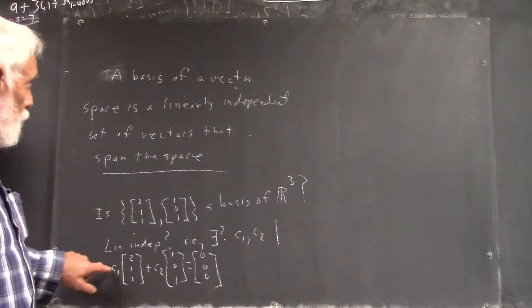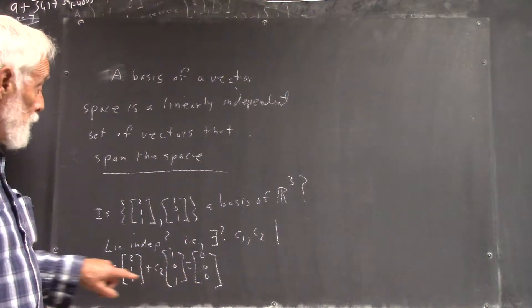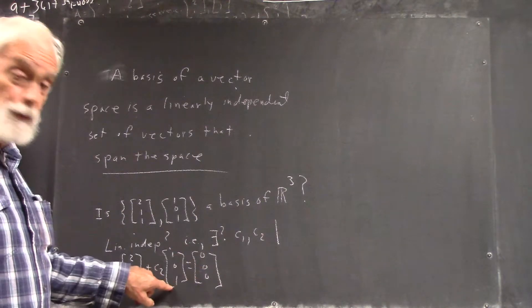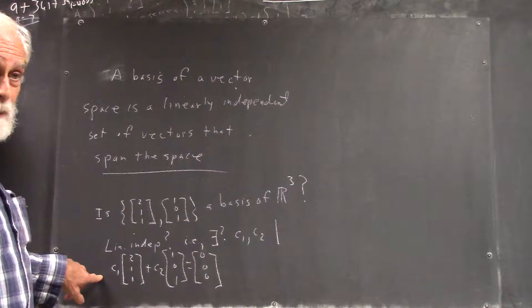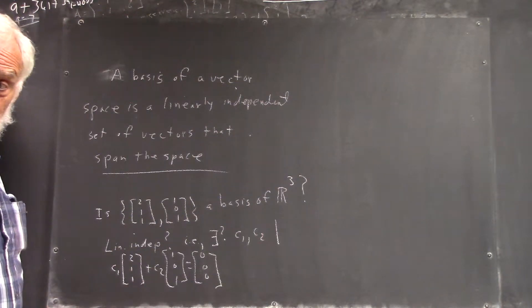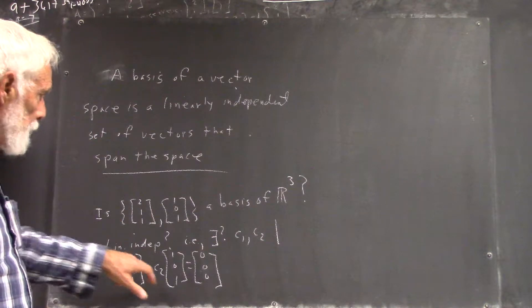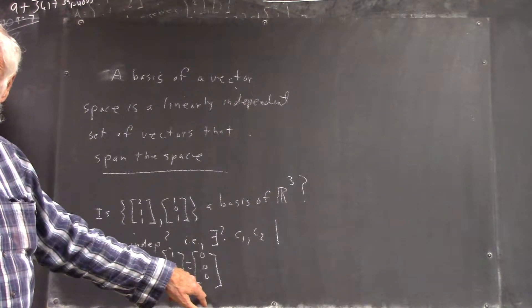Like if two times this plus three times this is a zero vector, that means two times this is negative three times this. Which means this is negative two-thirds times this, it's a multiple of the other one. And this is called a linear combination. We've got a linear combination that's equal to the zero vector.